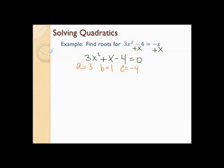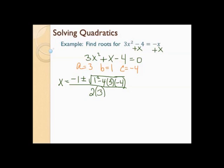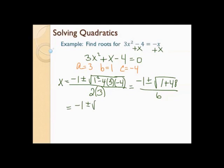Let's go ahead and plug it into the quadratic formula. So x equals negative b plus or minus the square root of b squared minus 4ac all over 2a. So negative 1 plus or minus — 1 squared is 1, negative 4 times 3 is negative 12, times negative 4 is positive 48. So that's 1 plus 48 all over 6. 1 plus 48 is 49. So I have negative 1 plus or minus the square root of 49 all over 6. The square root of 49 is just 7.